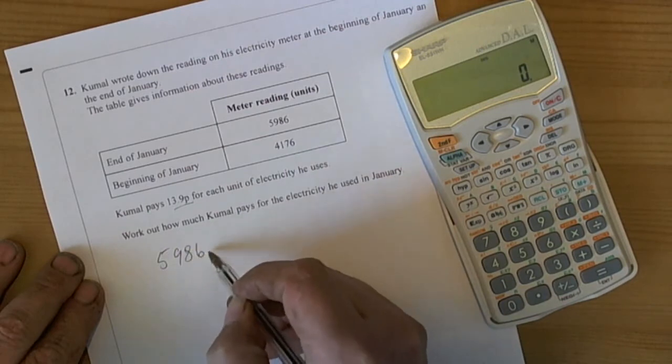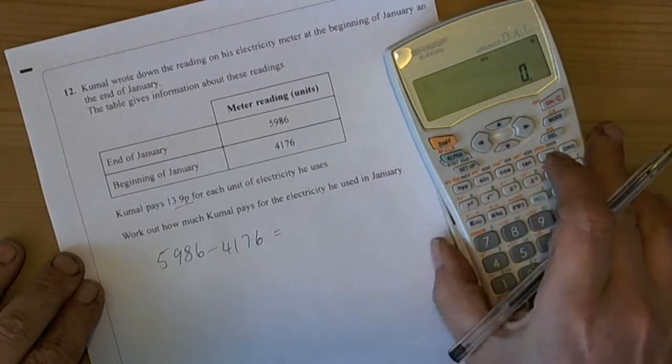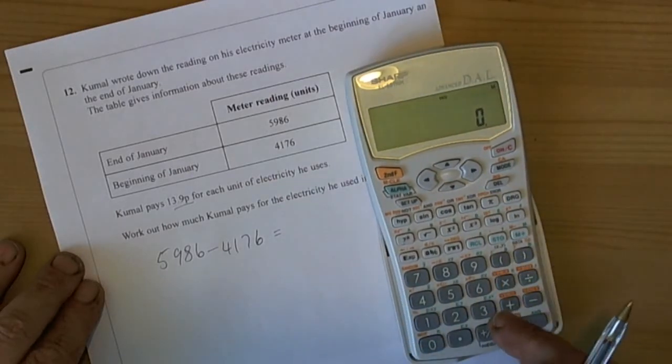So we're going to do 5,986 take away 4,176, and that will tell us the amount of units of electricity used that we have to pay for.